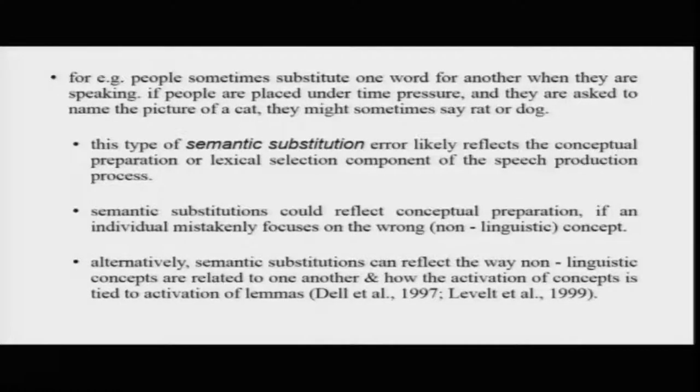Let us take an example. Sometimes people substitute one word for another — this is called semantic substitution. People sometimes substitute one word for another when speaking, especially when placed under time pressure, going to an interview, or when nervous. You wanted to say one word, but you said something different. For example, you are supposed to name a picture of a cat, but you name it as a rat.